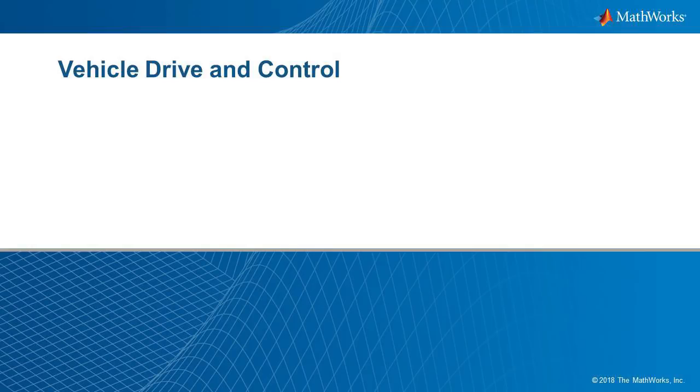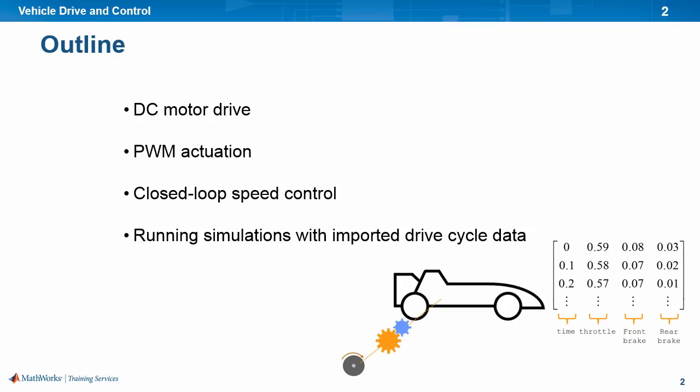In this video, we are going to discuss vehicle drive and some basic control concepts. Specifically, we will talk about how to implement a DC motor drive mechanism, what is PWM — that is pulse width modulation actuation. We will also discuss performance considerations for the PWM model, then closed loop speed control of the vehicle, and finally running simulations with imported drive cycle data.